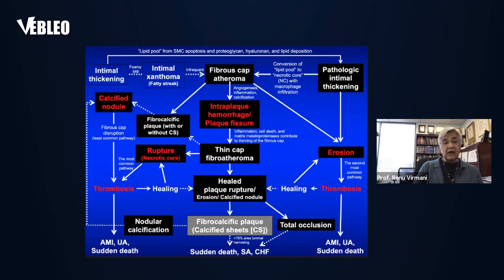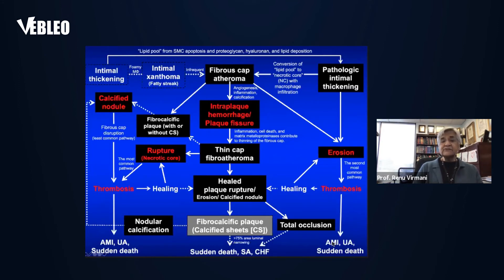There are multiple pathways to reach acute coronary syndromes — that is, acute myocardial infarction, unstable angina, or sudden death. This can occur from plaque rupture, plaque erosion, or calcified nodule — all through thrombosis. Alternatively, stable plaques such as healed plaque rupture and fibrocalcific plaque can also lead to sudden coronary death. Most acute coronary syndromes occur through thrombosis.